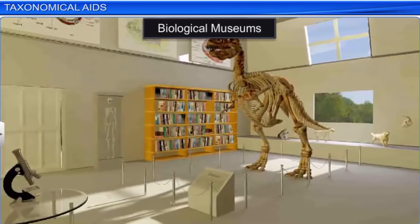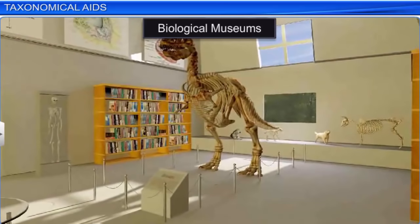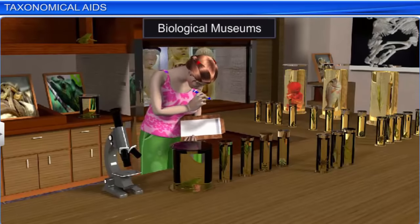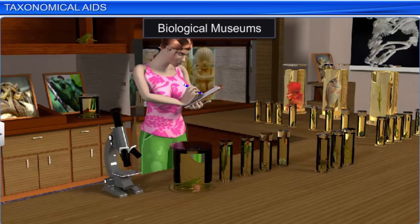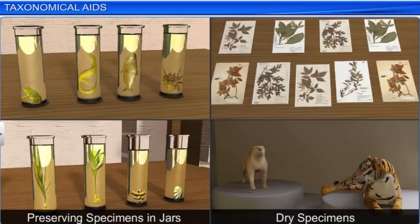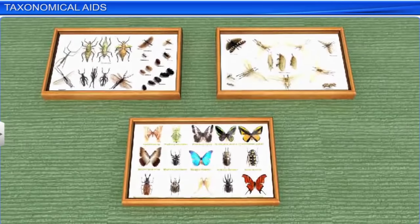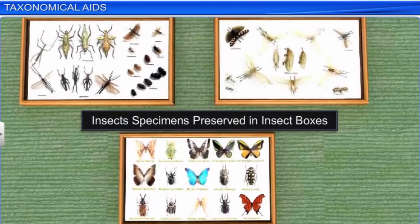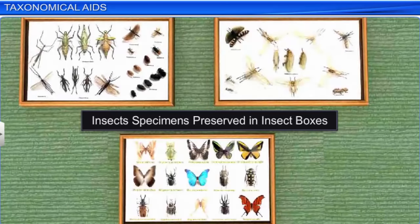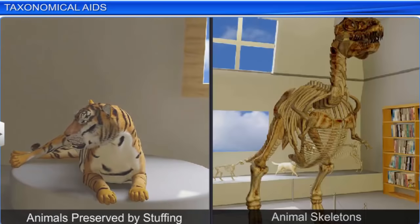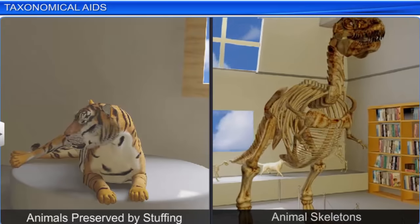Biological museums, set up in educational institutions, also act as taxonomical aids. These museums have collections of preserved plants and animals, which are used for study and reference. They are preserved in jars using preservative solutions, or as dry specimens. Insects are collected, killed, pinned, and then preserved in insect boxes. Larger animals are typically stuffed and preserved, or their skeletons are displayed.